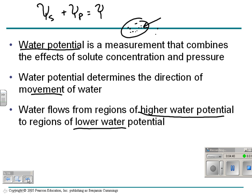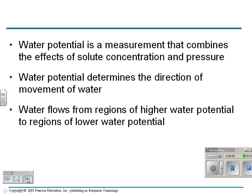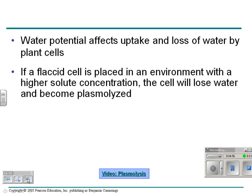You can also make water move by putting pressure on it. If you squeeze a cell like a sponge, water is going to go out because you've increased the pressure. That's water potential — just to review. It affects how plant cells take up water and lose water, and we're going to come back to this.